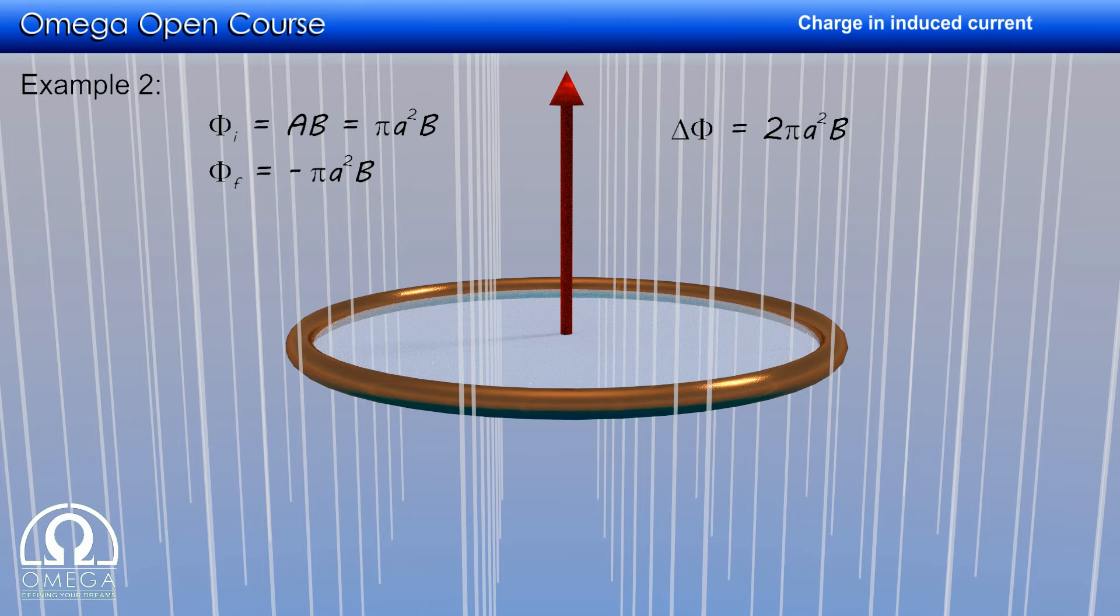So the total change in flux is 2πA²B and therefore the charge flowing through the ring in this case is 2πA²B/R. This is our answer.